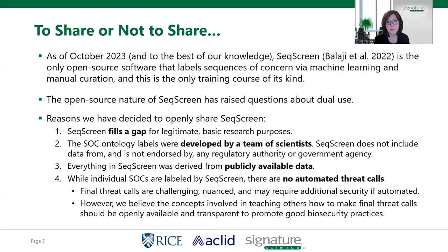Please do not take anything in this course as being something that anyone other than the authors is recommending you use. While individual sequences of concern are labeled by SeekScreen, there are no automated threat calls made by SeekScreen — and that is a very important distinction. Our SeekScreen software and databases will take users through taxonomic assignments, functional calls, and characterization, including adding pathogenic ontology labels to sequences. But we do not go so far as to say this sequence is a threat or not a threat. We don't do green, yellow, red classifications or any other high-level categorization of threat.